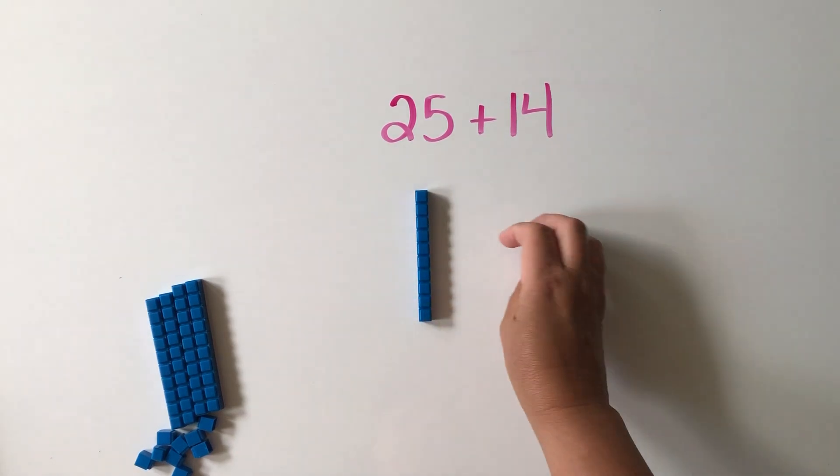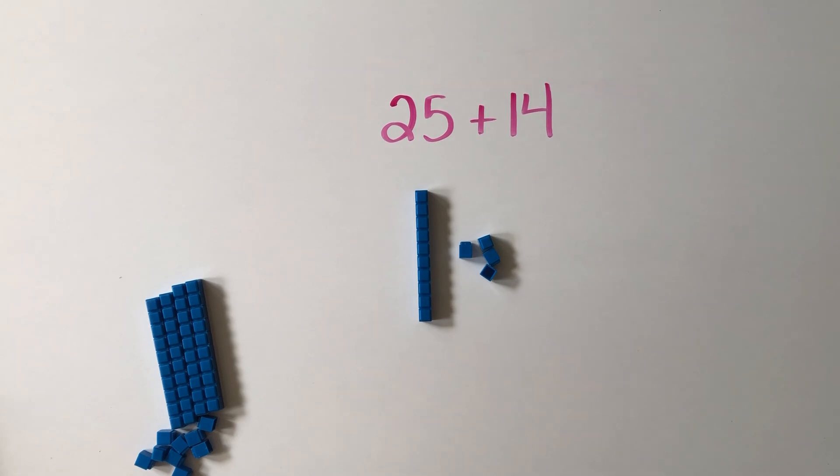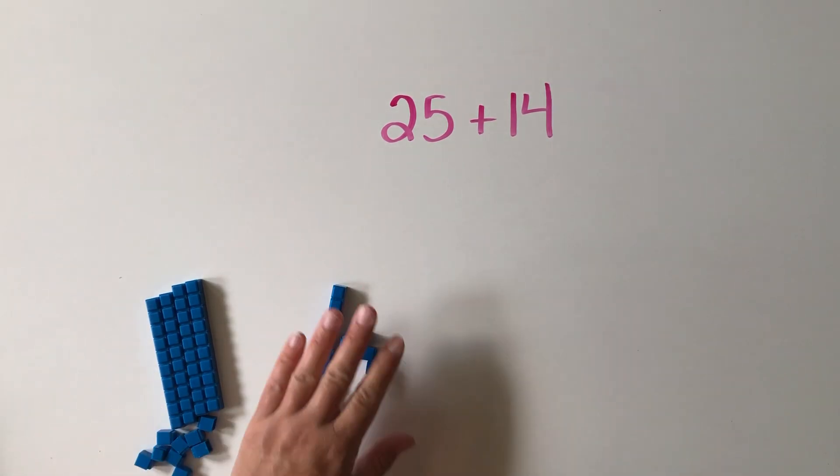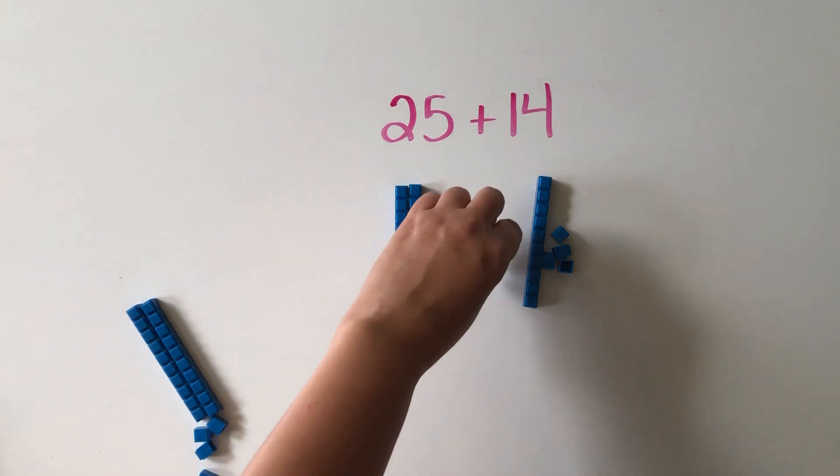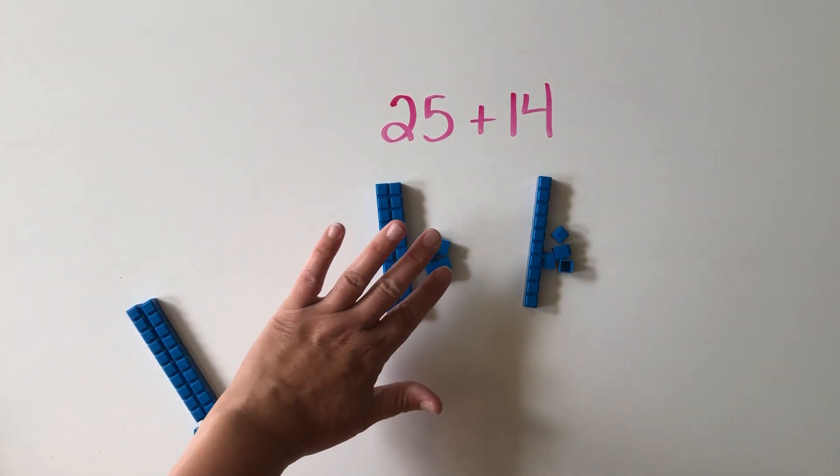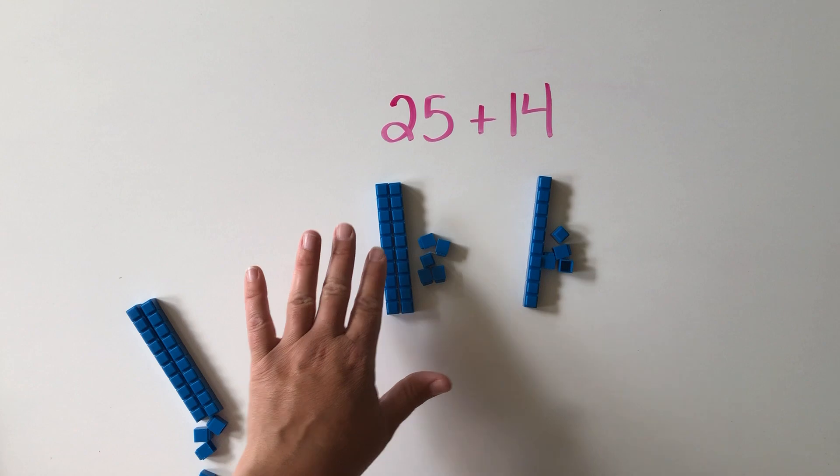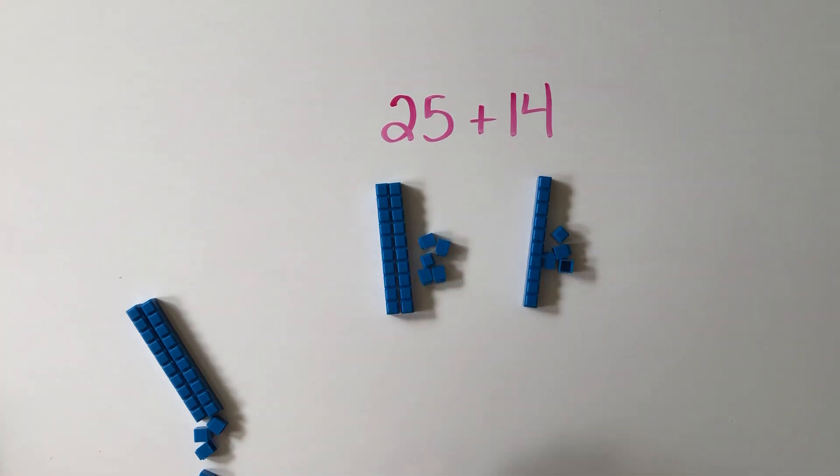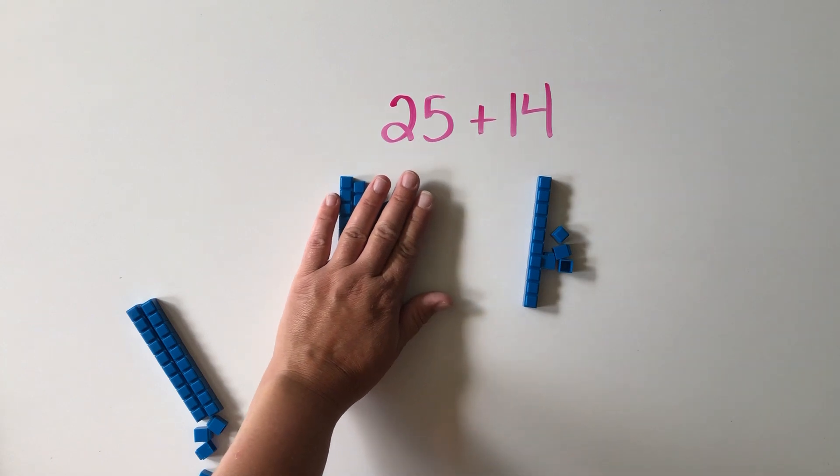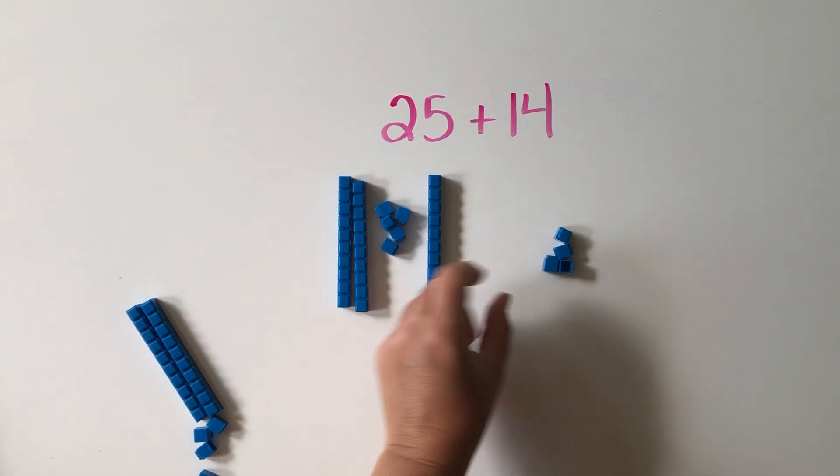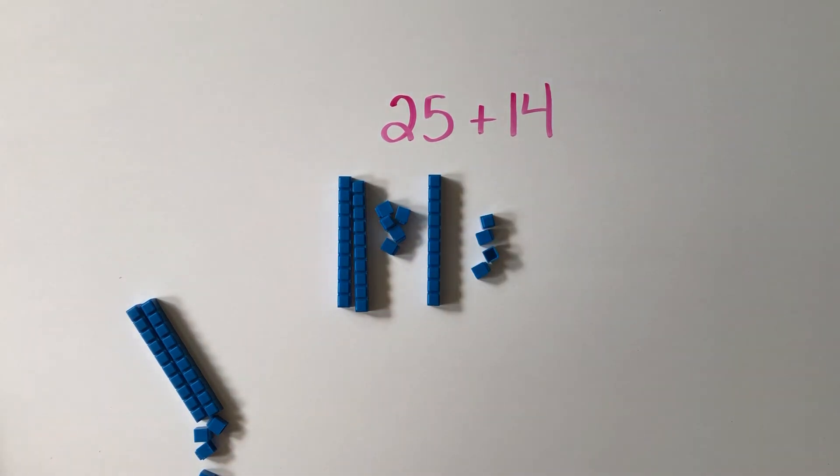We could also represent both of these numbers with base tens, but instead of grouping them by tens and ones like we might do for left to right addition, we can simply start with 25 and then add to make 39. This is a great way to make the break apart strategy very concrete.